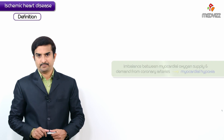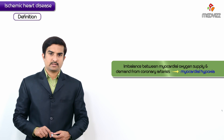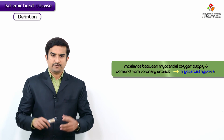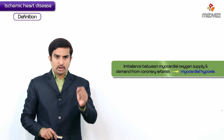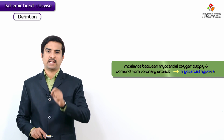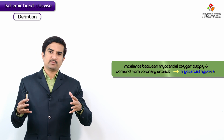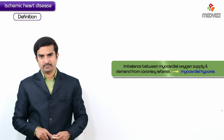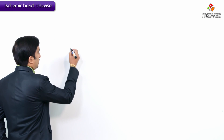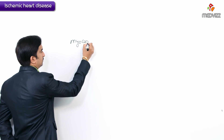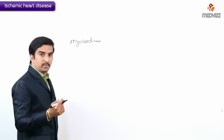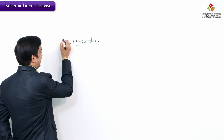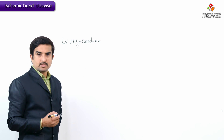Ischemic heart disease develops mainly because of an imbalance between myocardial oxygen demand and the supply from the coronary arteries. Whenever there is an imbalance between demand and supply, there will be development of ischemia. More precisely, the left ventricular myocardium pumps the blood.